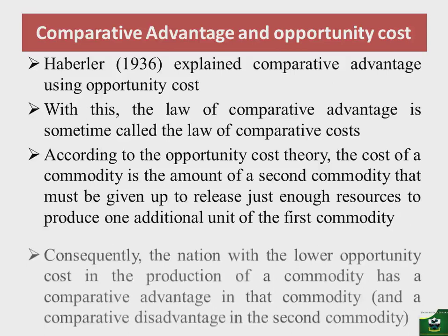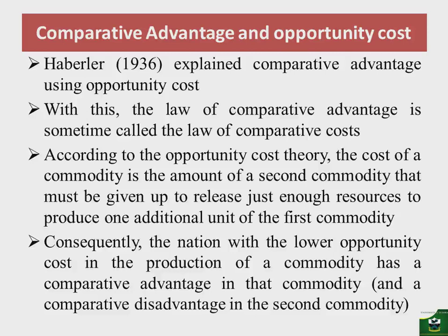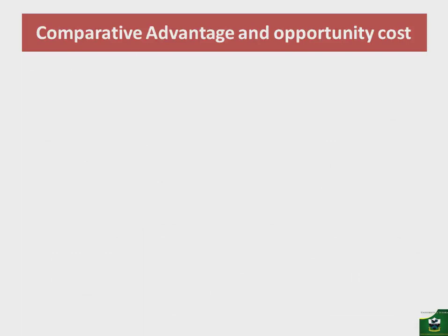Consequently, the nation with the lower opportunity cost in the production of a commodity has a comparative advantage in that commodity, and will have a comparative disadvantage in the other commodity. If nation A has a lower opportunity cost in producing commodity X, then nation A has a comparative advantage in the production of commodity X, and if it has a higher opportunity cost in producing Y, it has a comparative disadvantage in Y.